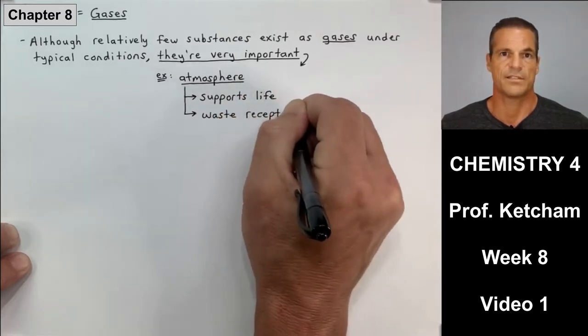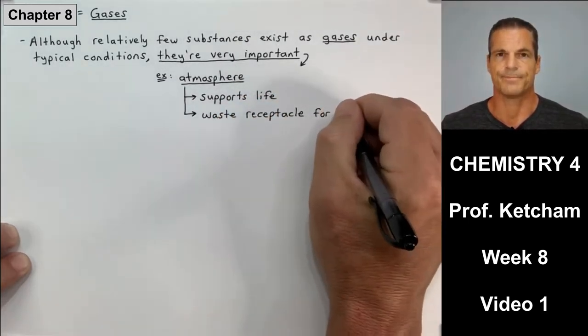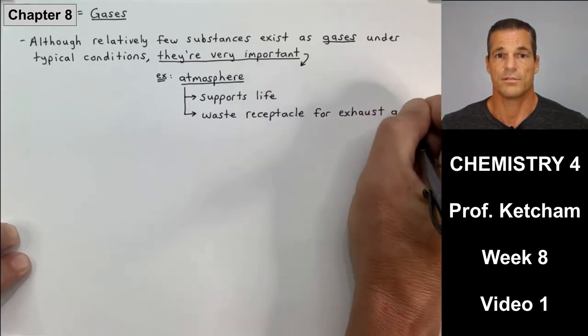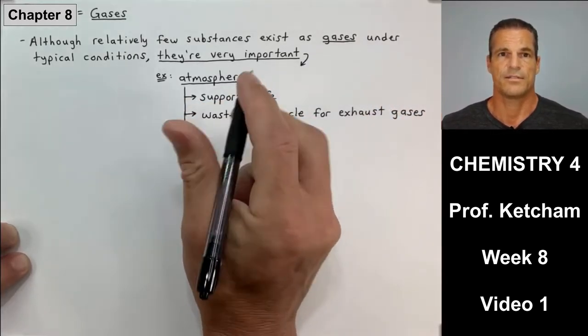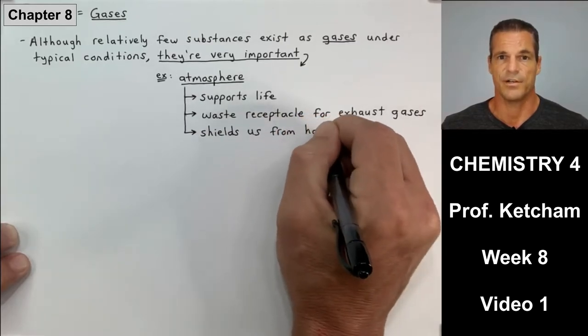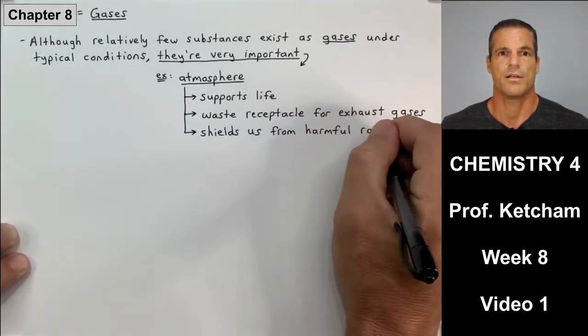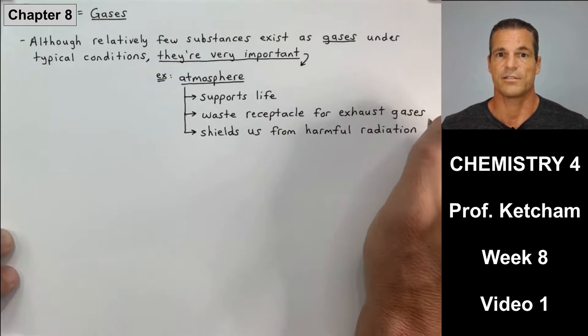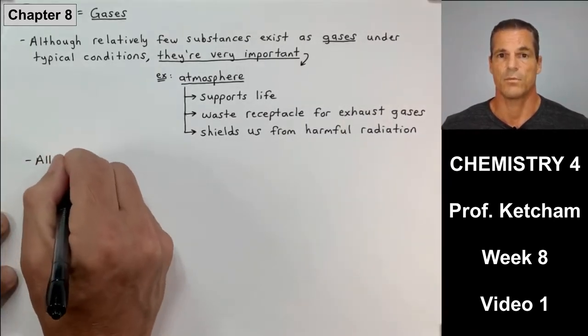One very obvious example is our atmosphere. Our atmosphere supports life, it's a waste receptacle for exhaust gases produced here on Earth, and also the atmosphere shields us from the sun and its harmful radiation.